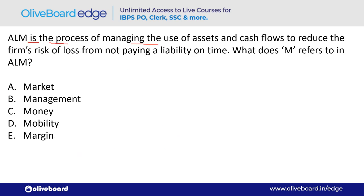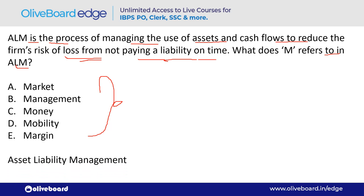ALM is the process of managing the use of assets and cash flows to reduce the firm's risk of loss from not paying a liability on time. What does 'M' refer to in ALM? M is Management — option B. The full form is Asset Liability Management. Remember it is liability, not leverage.